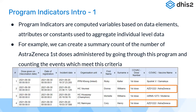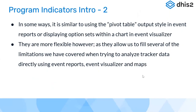We don't have to use the analytic tools apps in DHIS2 to make this calculation. That's what program indicators do — they calculate automatically and give us the exact value. In some ways it is similar to using the pivot table output style in event reports or displaying options within the chart in event visualizer.